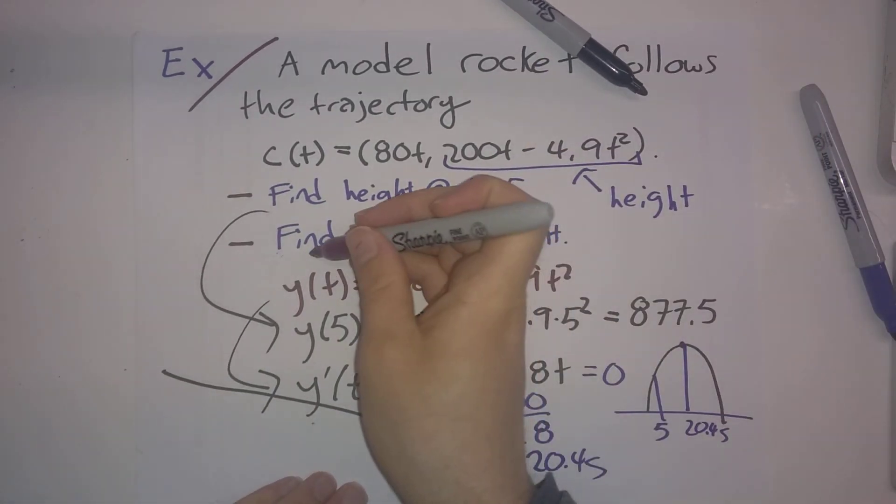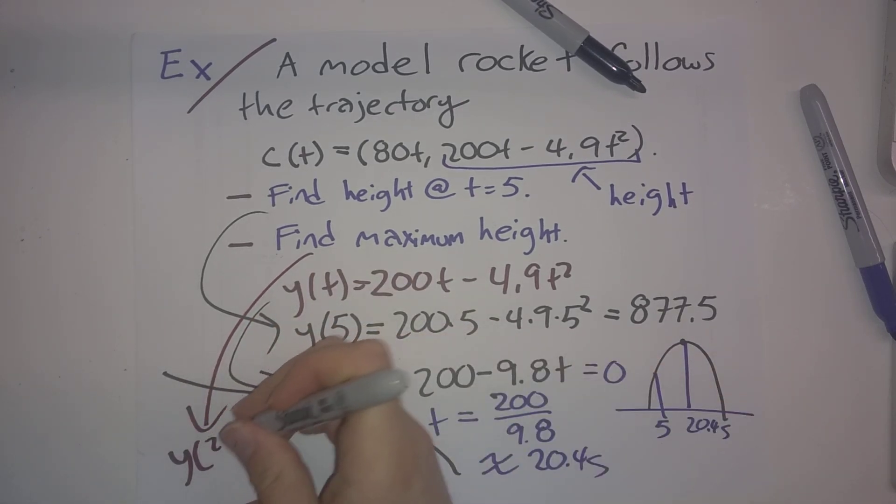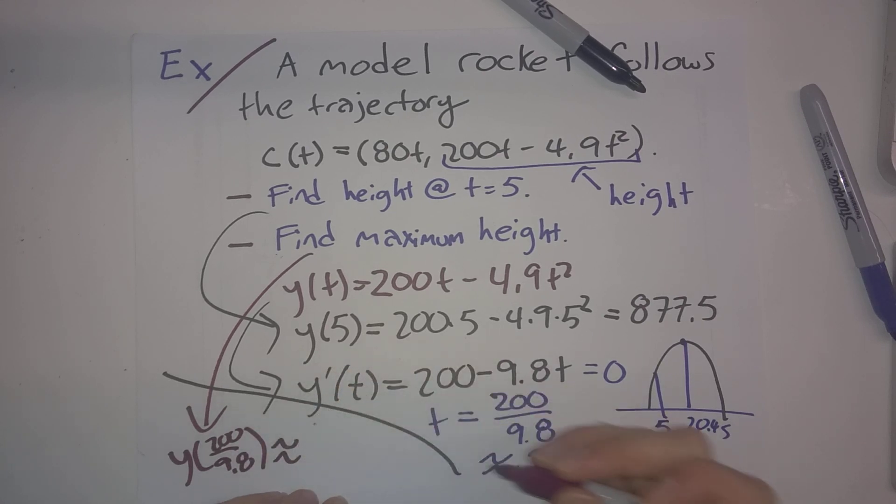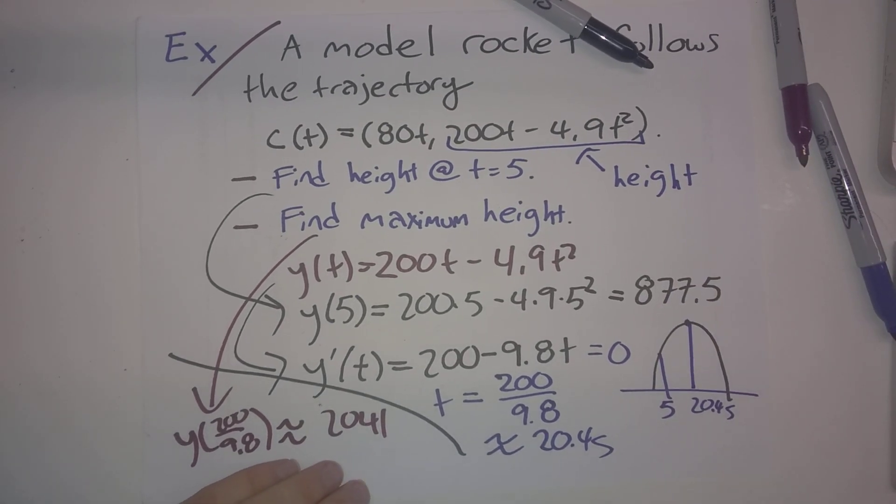which is for the maximum height, this is y(200/9.8), which when you plug that in, you get about 2,041 meters. So those are a couple of typical problems.